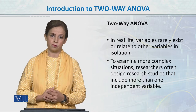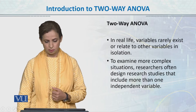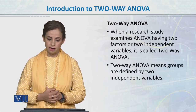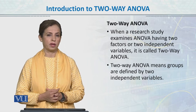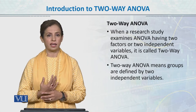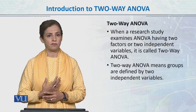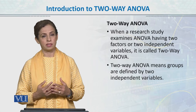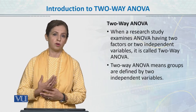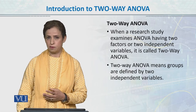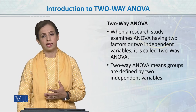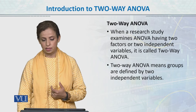Today we will talk about two-way analysis of variance where we have more than one independent variable. When a research study examines ANOVA having two factors or two independent variables, it is called two-way ANOVA. Two-way ANOVA means groups are defined by two independent variables. For example, studying the performance of students on stage — examining the effect of audience presence and the effect of self-esteem on performance errors made on stage. In factorial ANOVA we can add more variables, but today's lecture covers only two-way ANOVA with two independent variables.